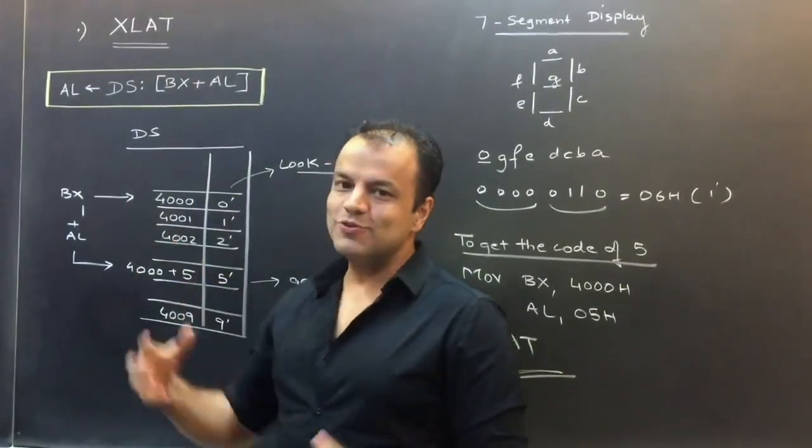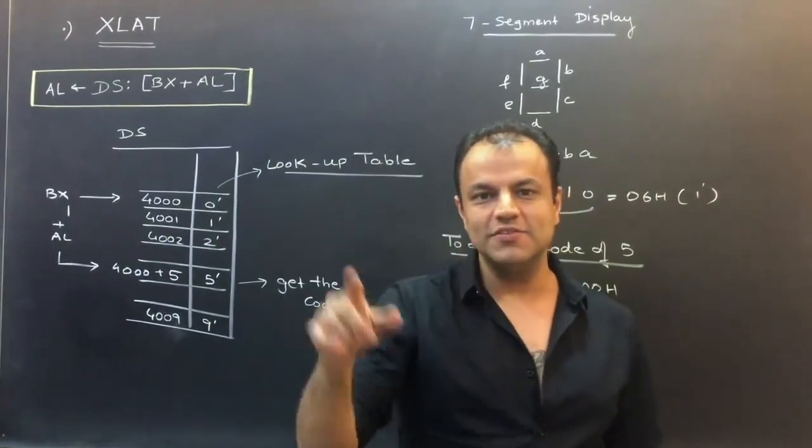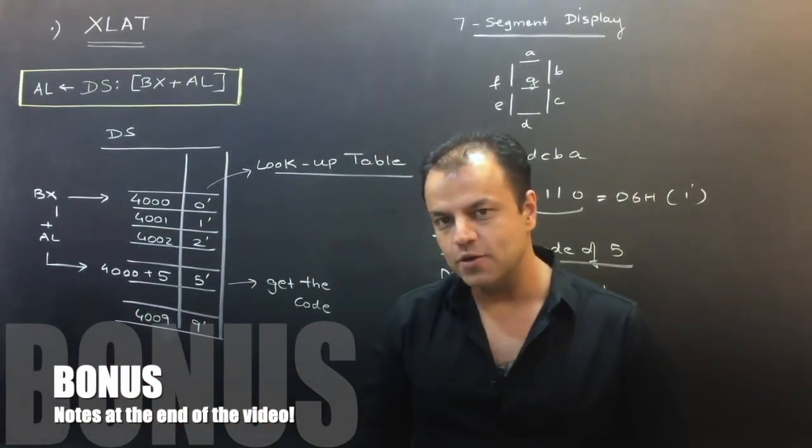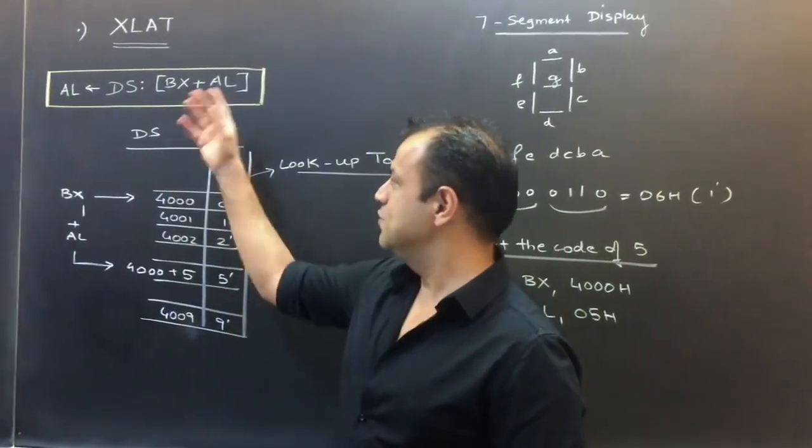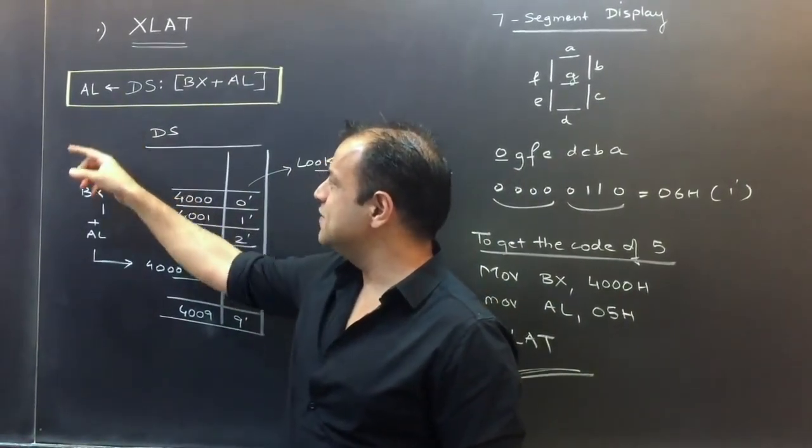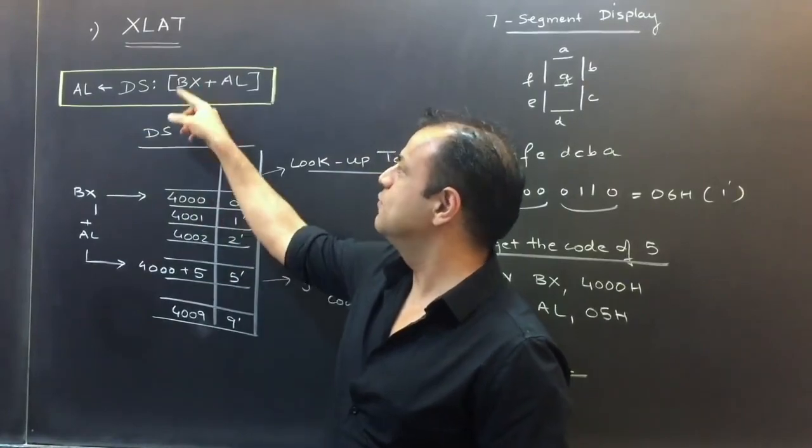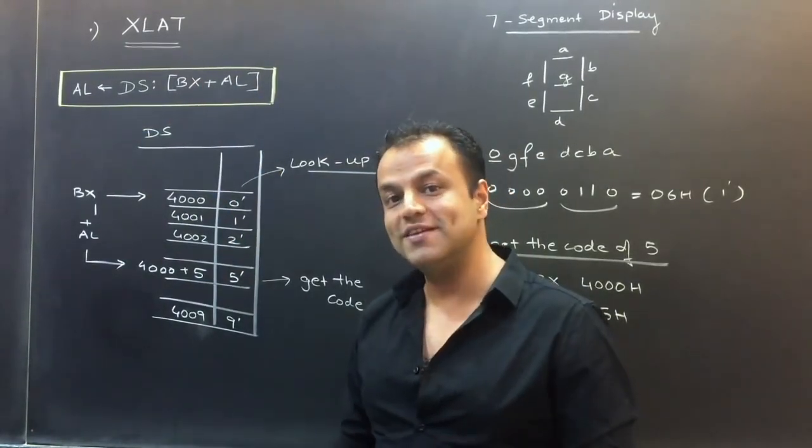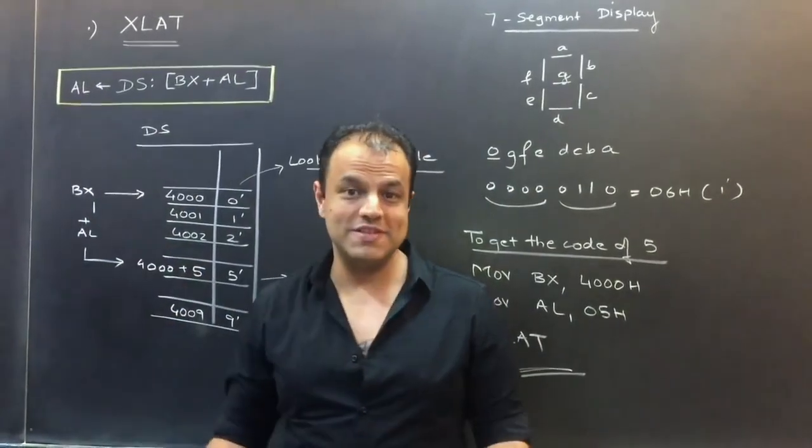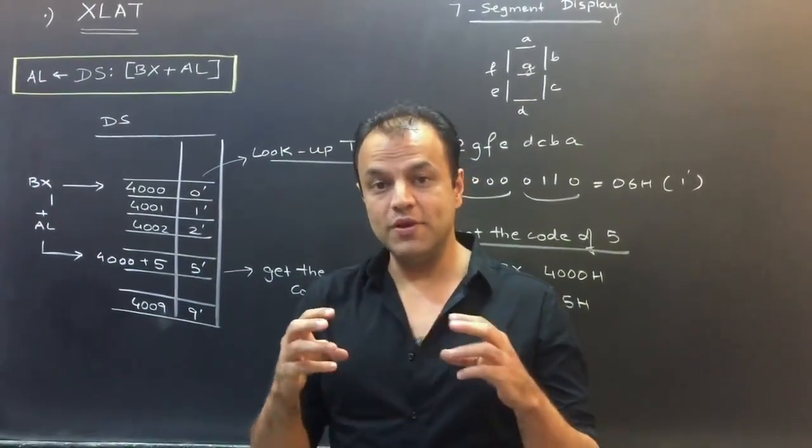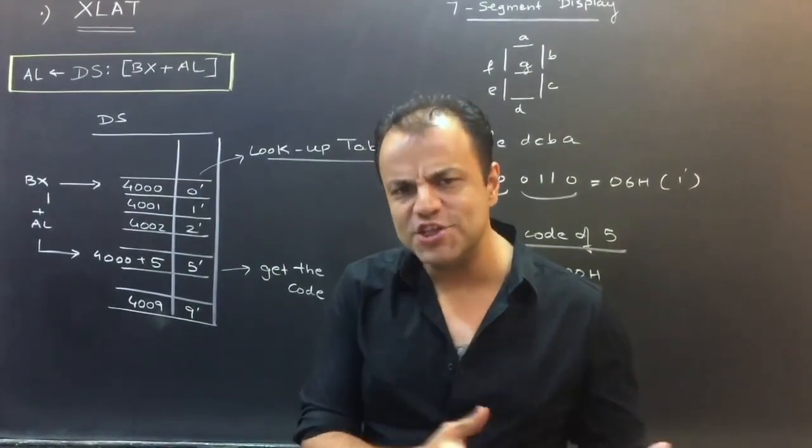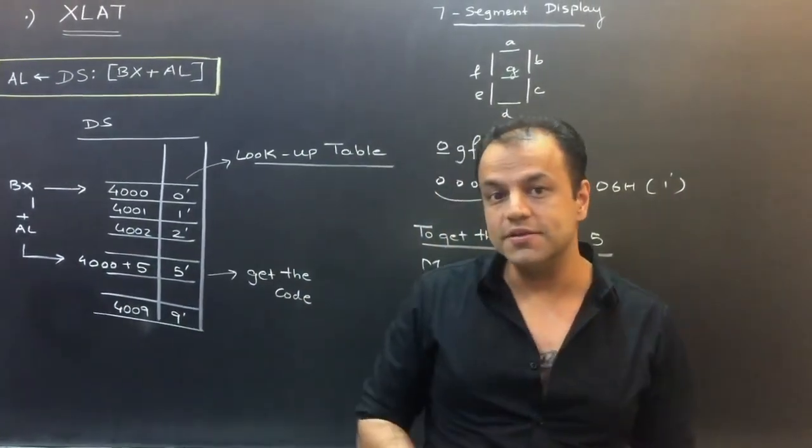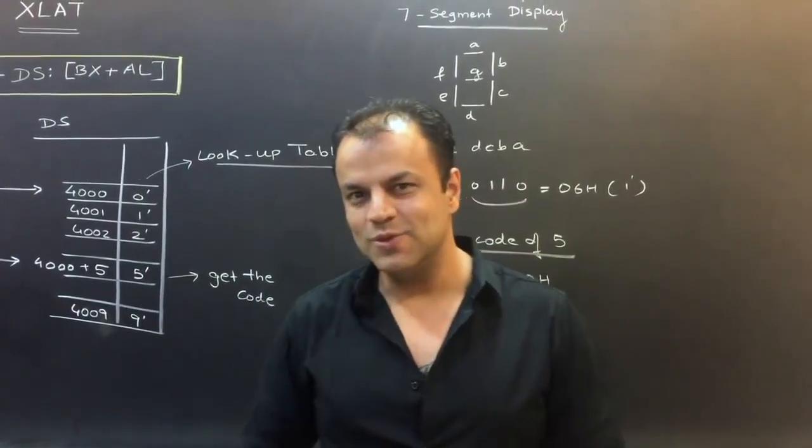So now, how do you pronounce XLAT? XLAT is pronounced as translate. The X is short form for trans, so it is pronounced as translate. What does this instruction mean? When you write XLAT, AL register gets the data from data segment from an offset address given by BX plus AL. Once again, who gets the data? AL. From which segment? Data segment from an offset address given by BX plus AL, from a location given by BX plus AL. That's all that this instruction does. So, how is it called translate? Look here. Wonderful idea.